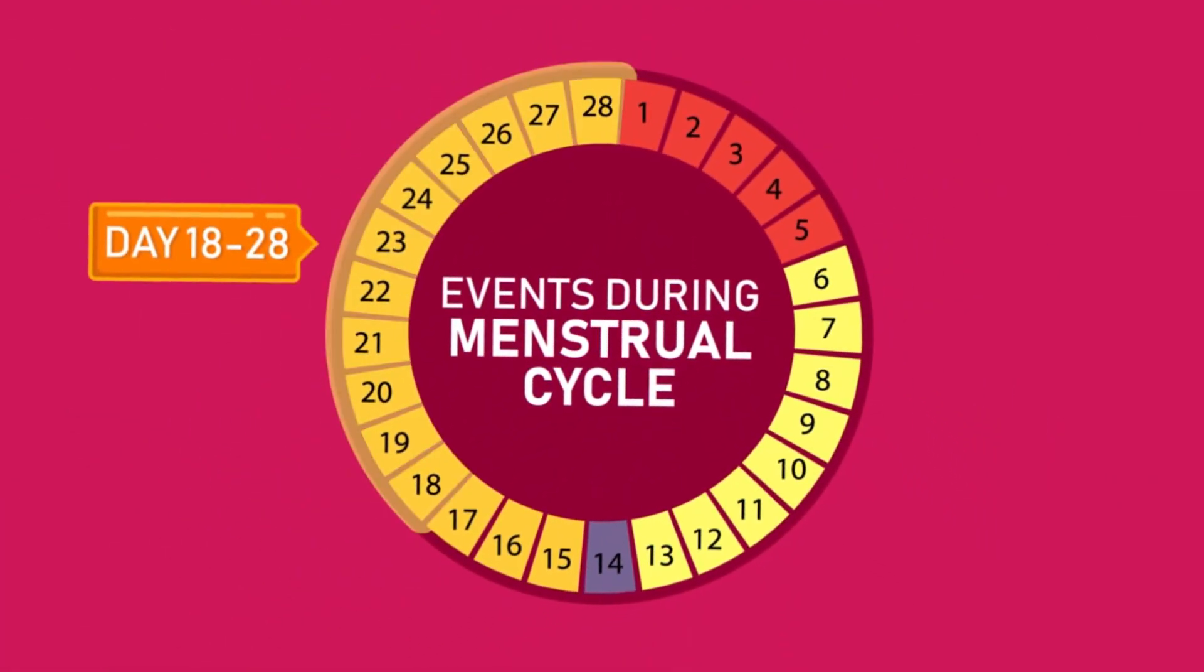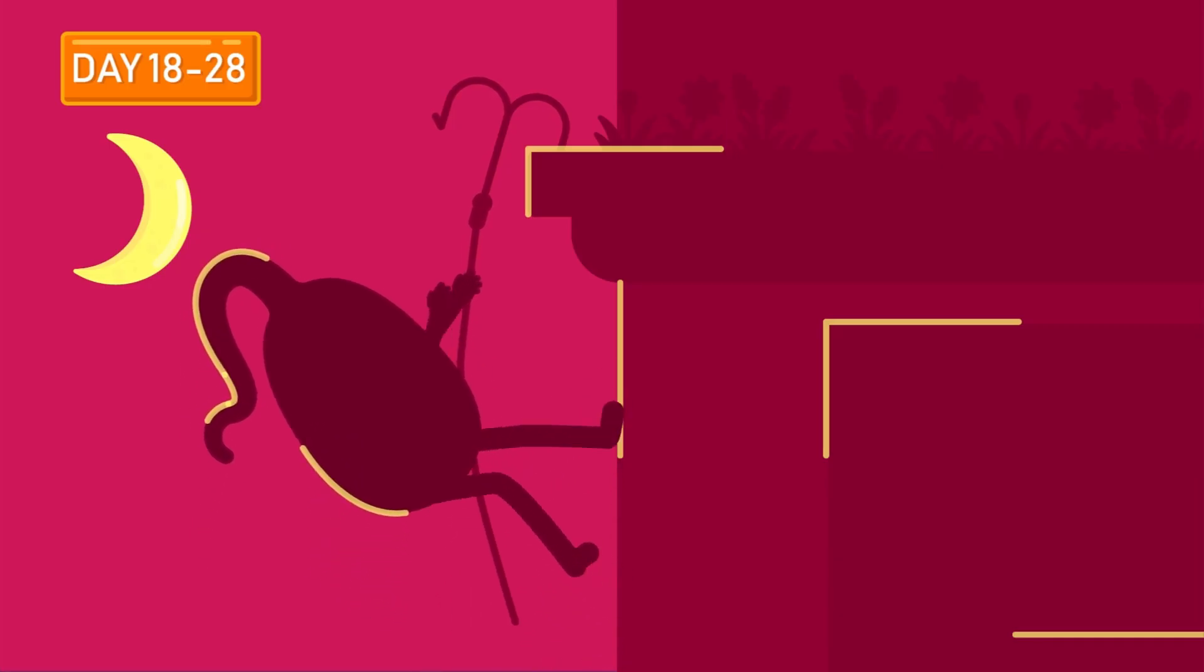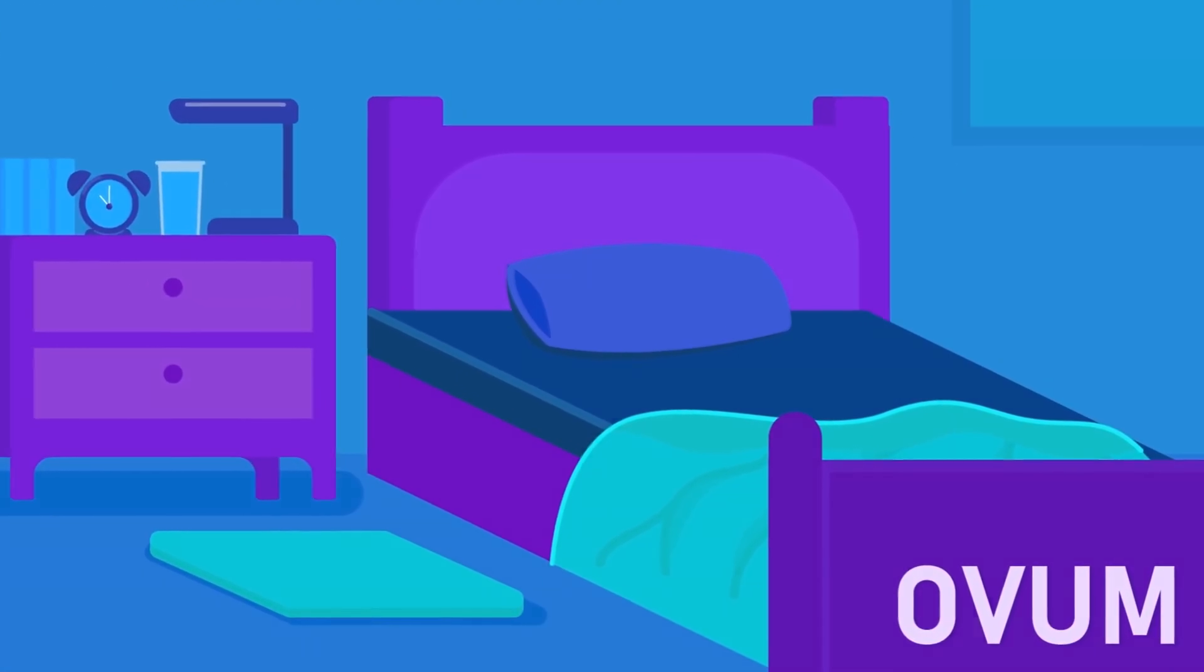Day 18 to 28, Phase 4. The rest of the days make up the infertile phase of the menstrual cycle. Sexual intercourse during this period is unlikely to result in fertilization, since no ovum is present.